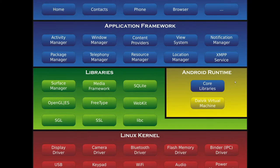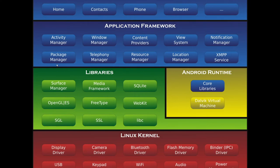On top of the Android Runtime we have the Application Framework, which consists of Android APIs. These APIs manage screens, windows, databases, UI elements, notifications, XMPP services, location, resources like storage, camera and microphone, telephonic calls, SMS, MMS, and different applications — so that developers can call these managers directly to write applications faster.